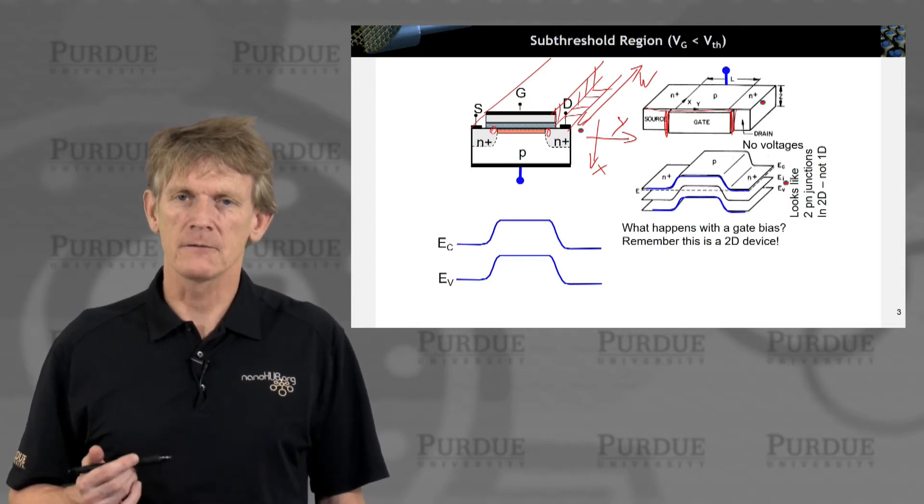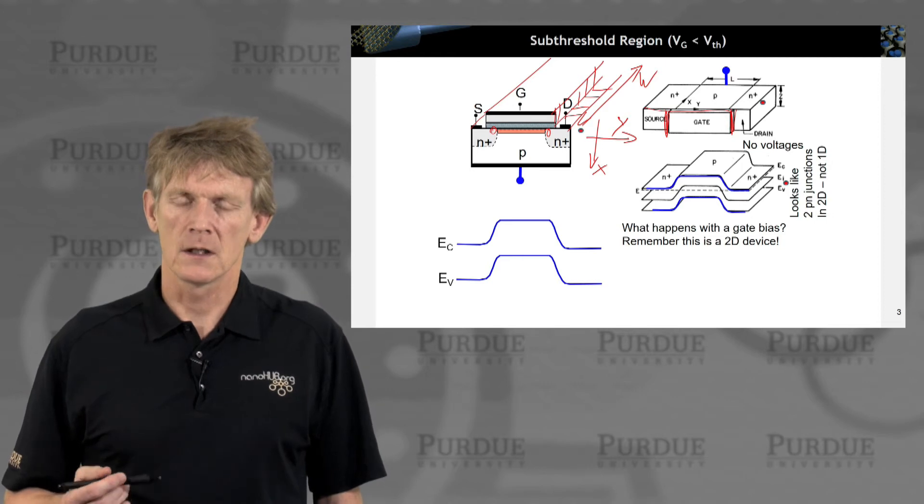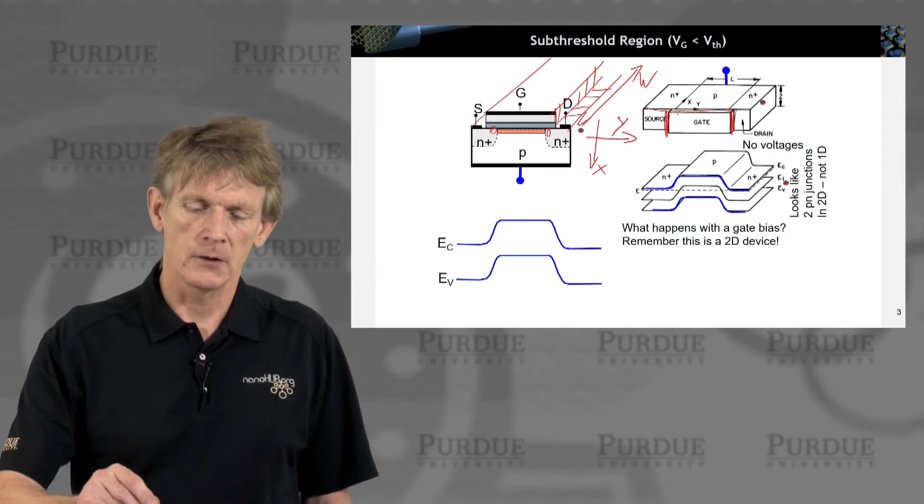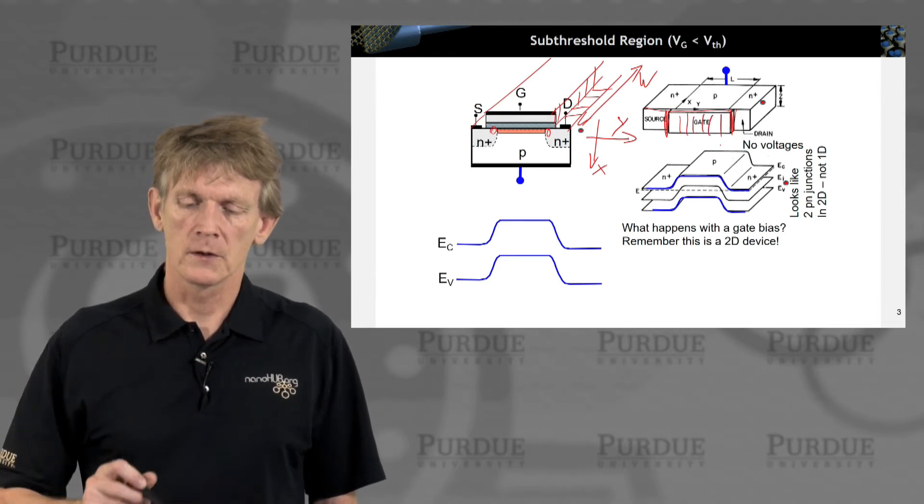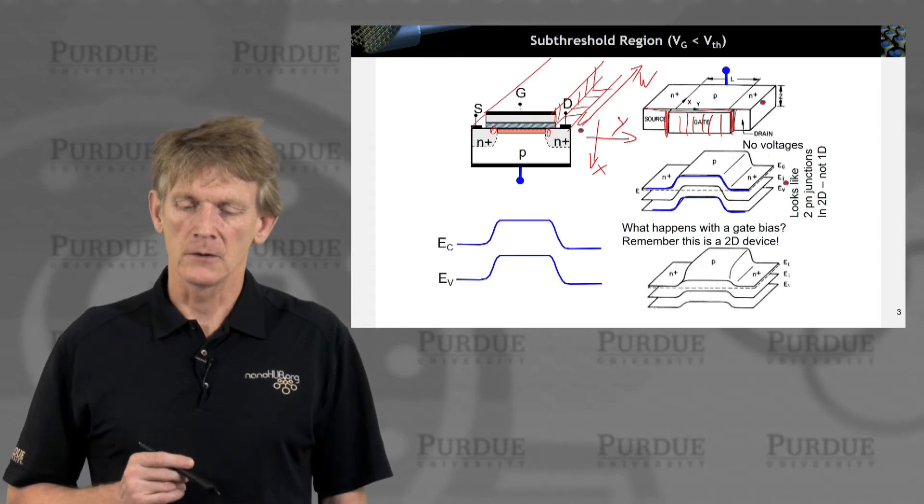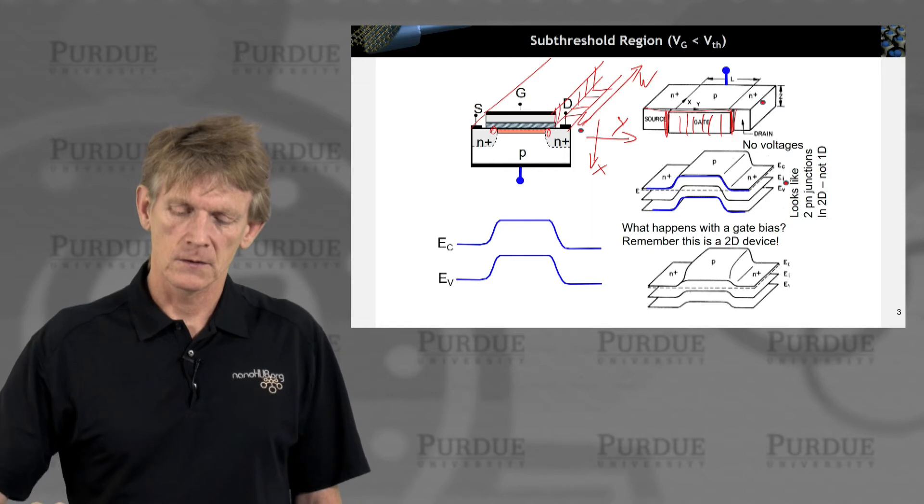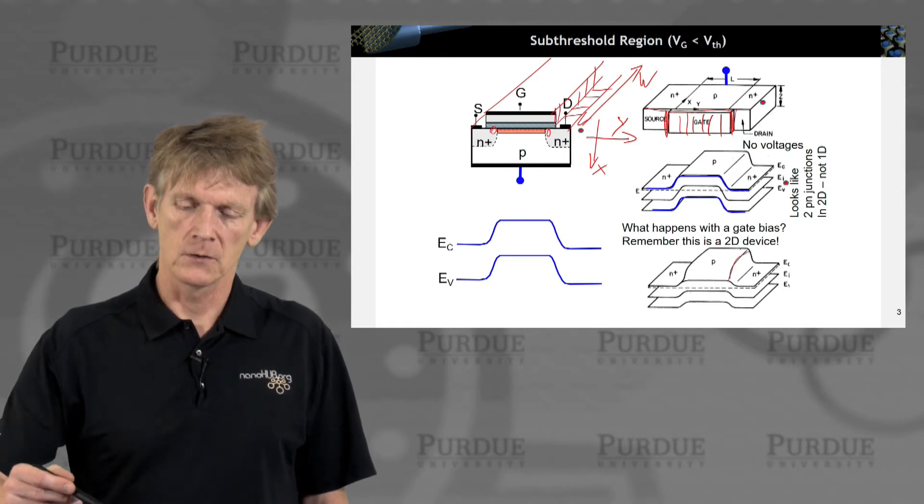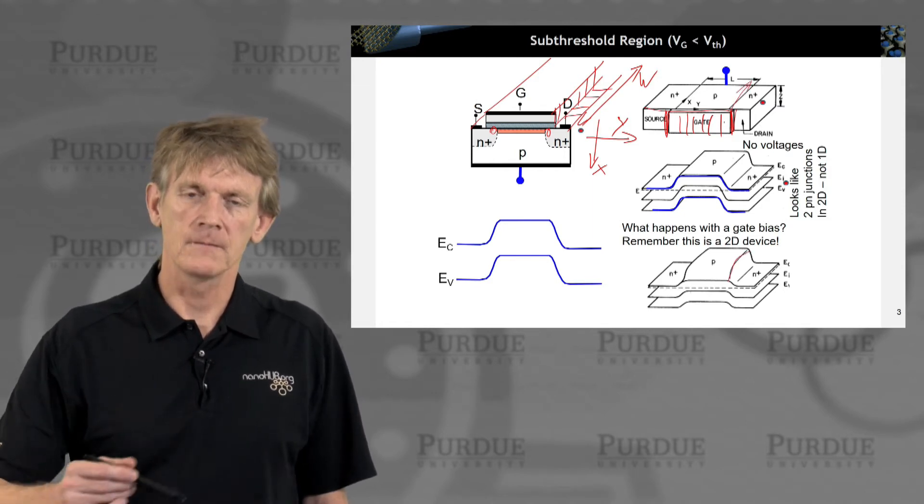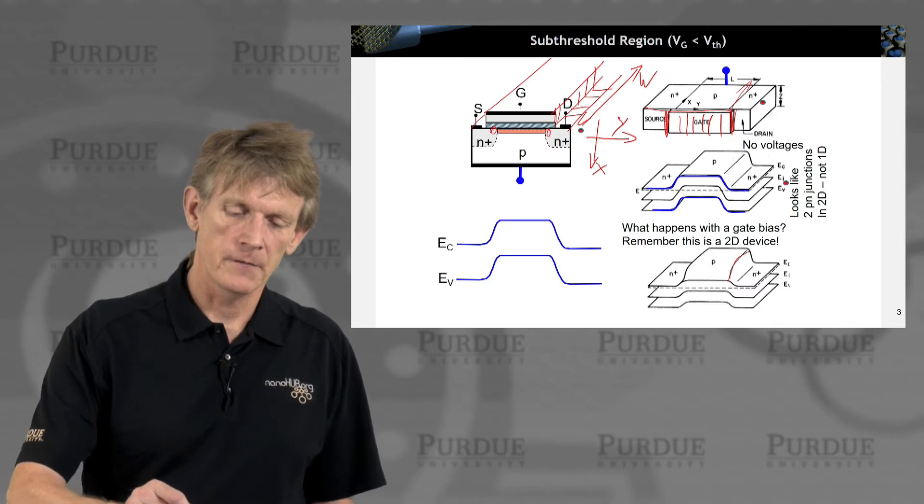what if you apply a gate voltage to this structure? So you apply a voltage here to this gate. Now that means you bend the bands in this dimension here, into the depth of the semiconductor, into the depth X here.